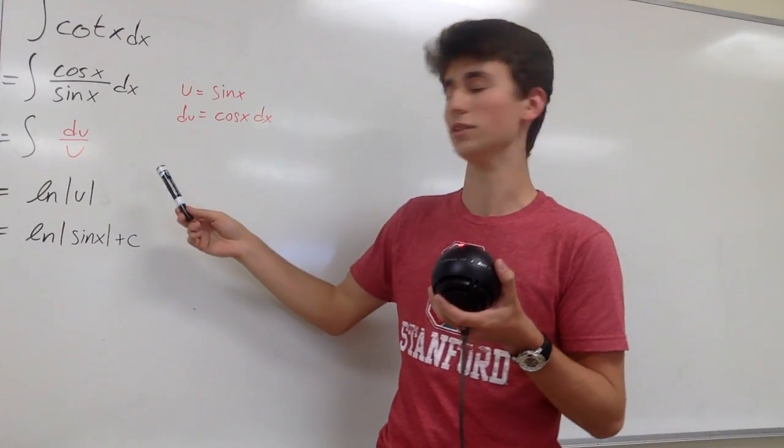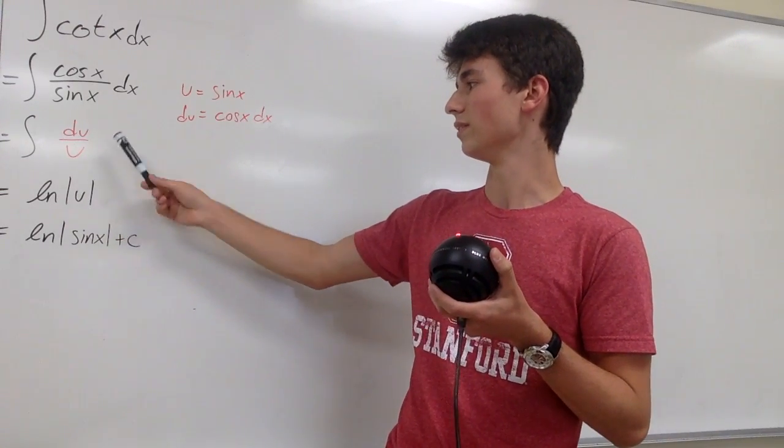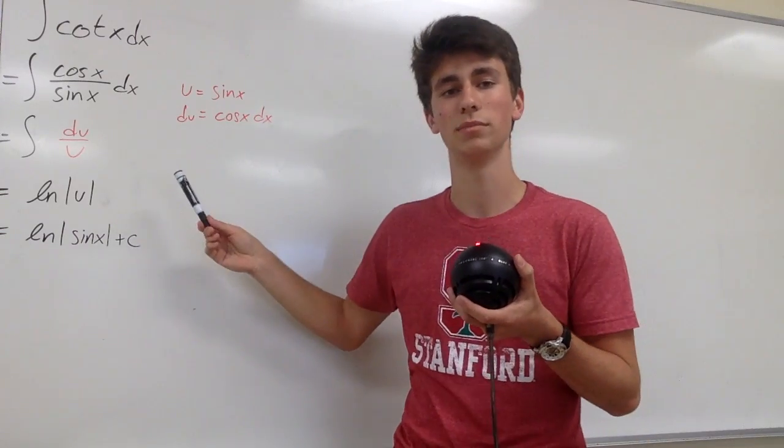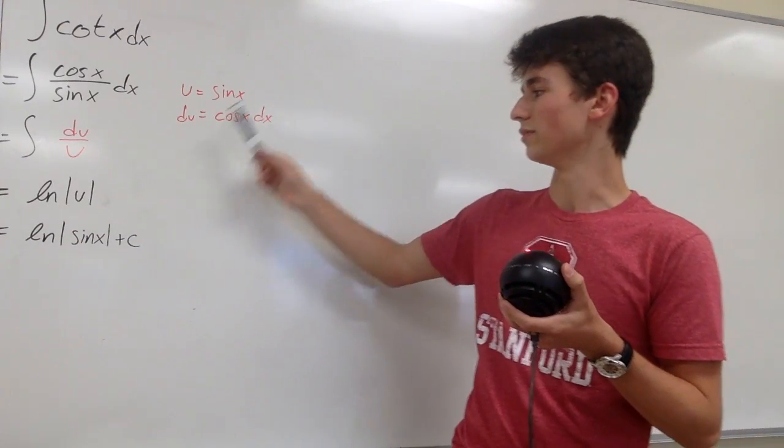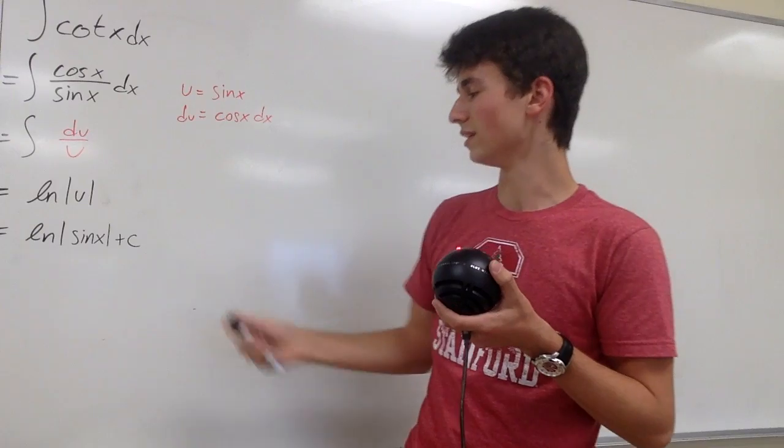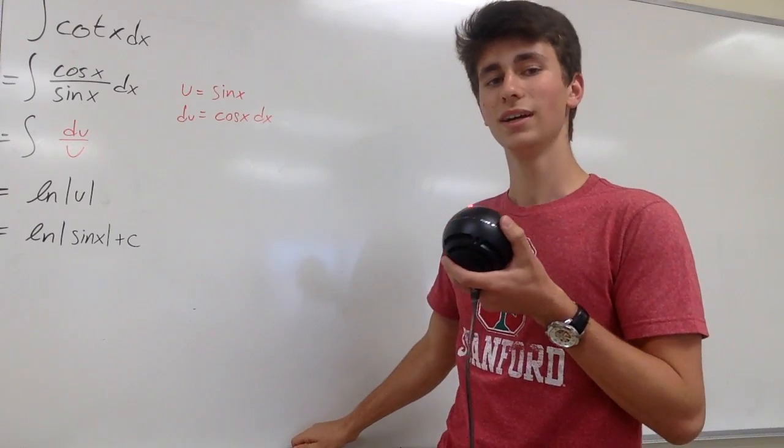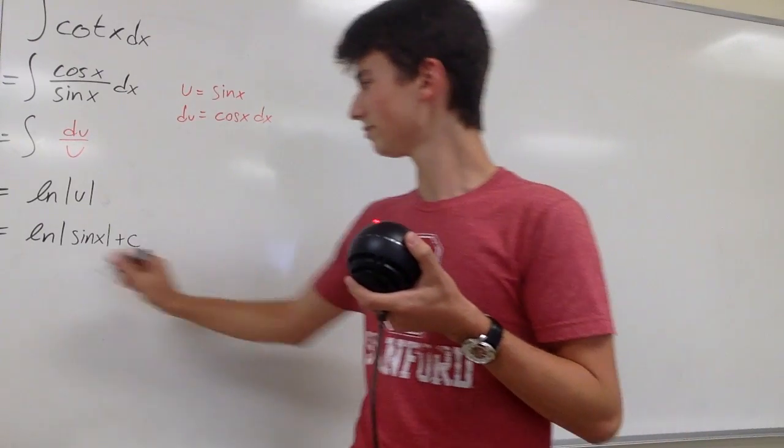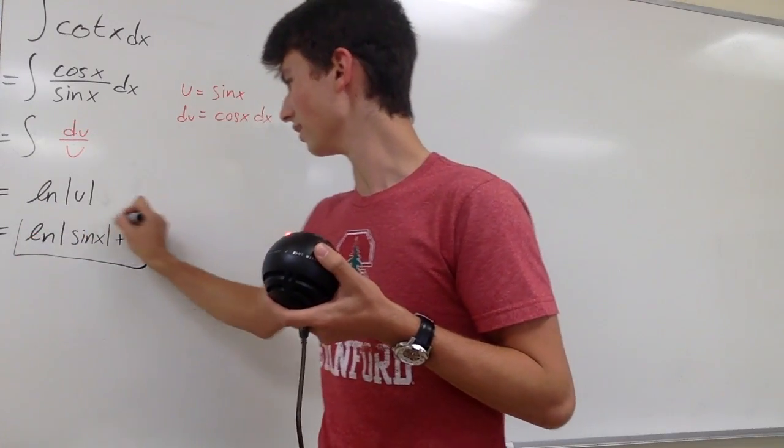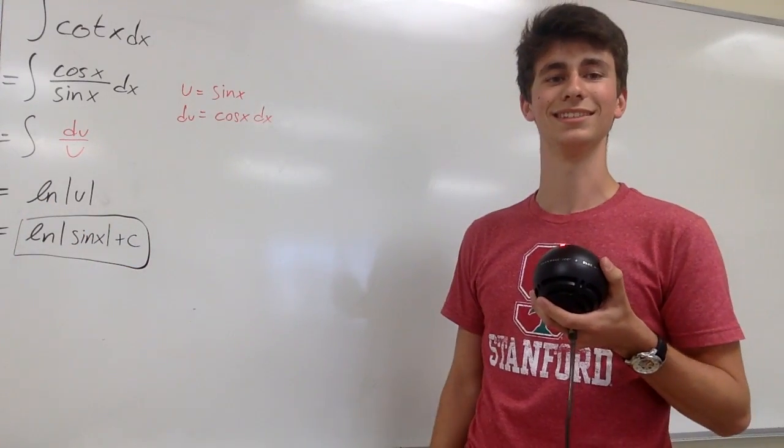The integral of du over u is natural log of the absolute value of u. We can plug sine of x in for u to get the final result of the natural log of sine of x plus c for the answer to our integral. And that's it.